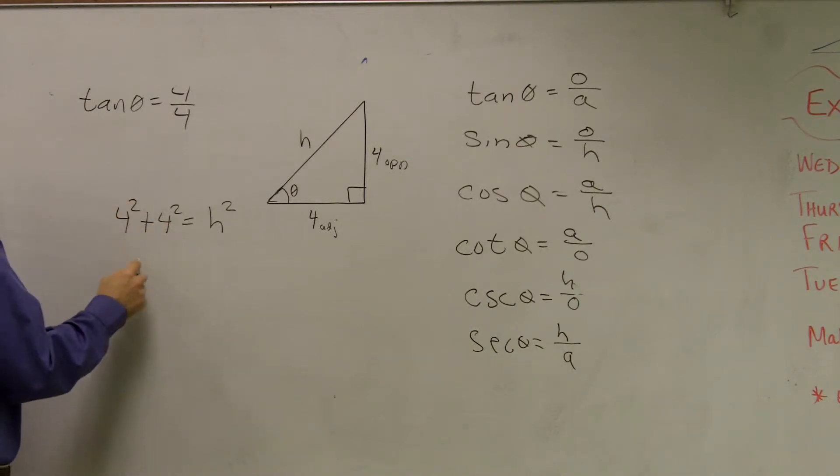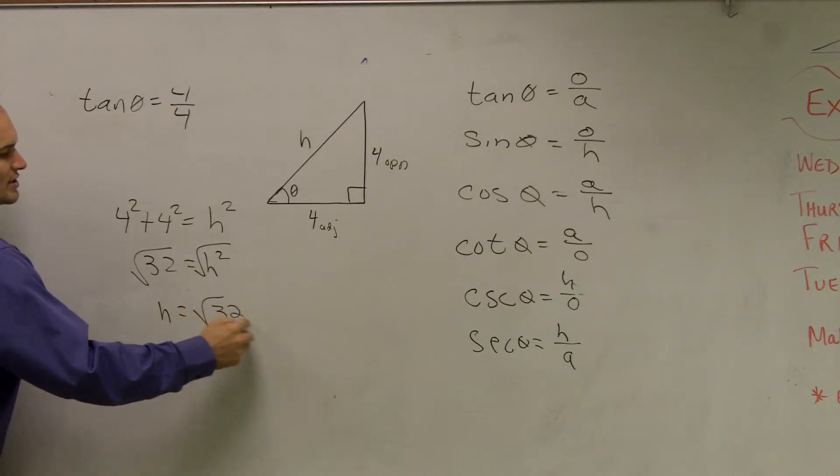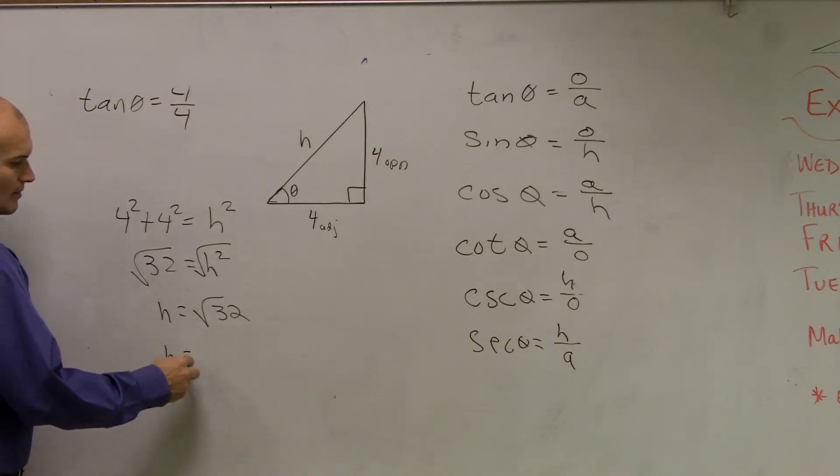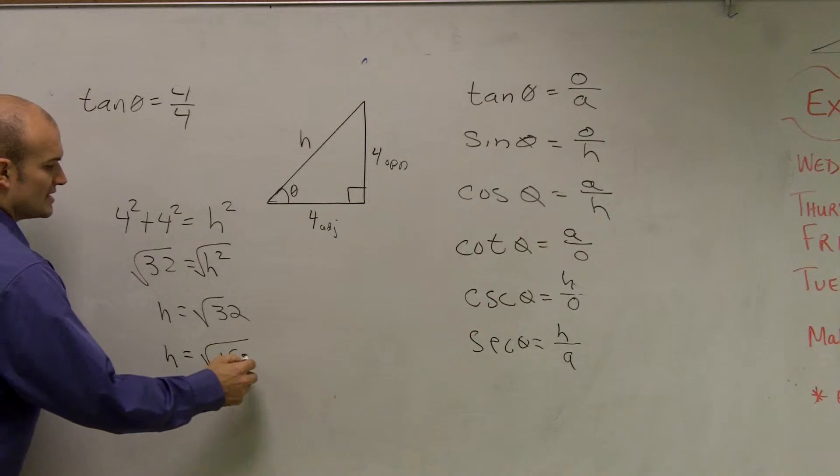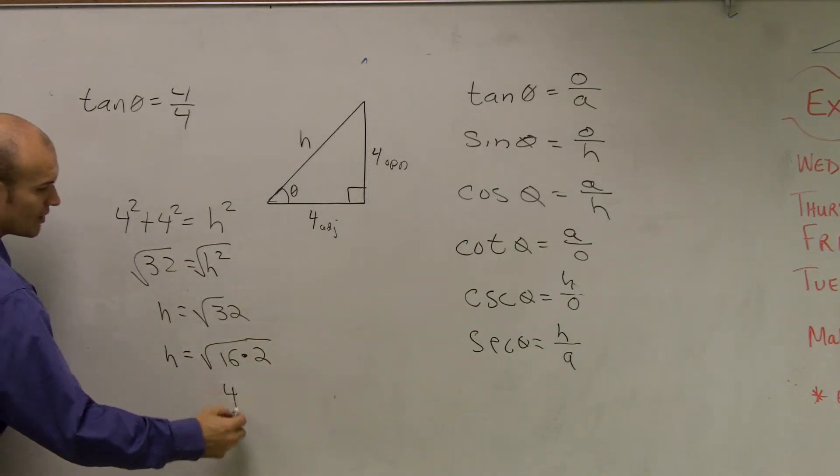So 4 squared is 16, plus 16 is 32, equals h squared. Then to find the value of h, I take the square root. So h equals the square root of 32. We can simplify the square root of 32. I can break that up into 16 times 2. The square root of 16 is 4, so it would be 4 radical 2.